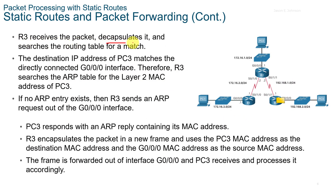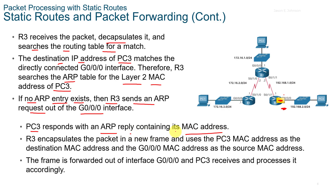When R3 receives the packet, it decapsulates it and searches the routing table for a match. The destination IP address of PC3 matches because it's directly connected to G0/0/0. R3 searches the ARP table for the Layer 2 MAC address of PC3. If no ARP table entry exists, Router3 sends an ARP request out that interface. PC3 responds with an ARP reply containing its MAC address. R3 then encapsulates the packet in a new frame using PC3's MAC address as the destination and G0/0 MAC as the source, and forwards the frame out the G0/0 interface to PC3.